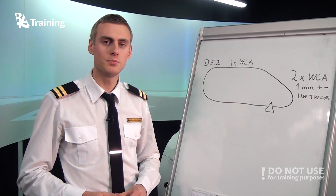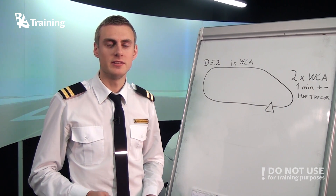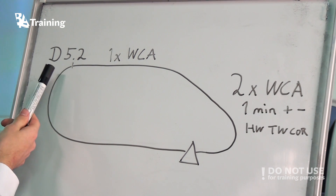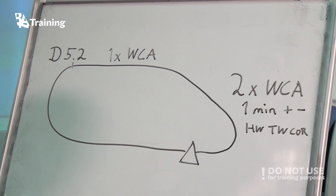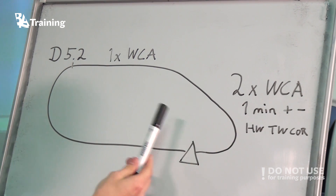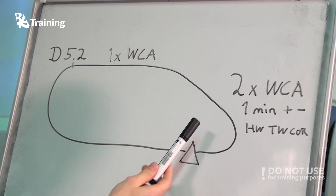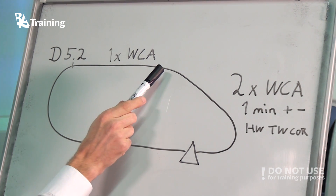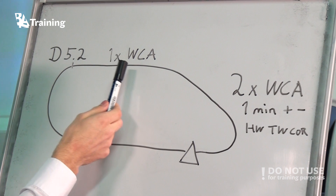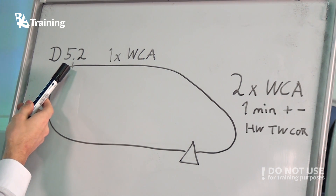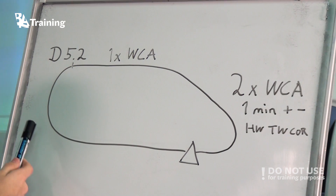As I told you before, the outbound leg can be determined by either time or distance from DME equipment. In this case, the outbound leg is determined by distance from DME. It's pretty much the same method — when we reach the fix, we start the turn and apply double wind correction. Fly it for one minute and make a correction for headwind or tailwind. After the time, we fly with single wind correction angle until we reach 5.2 DME, then we start the turn towards the inbound leg.